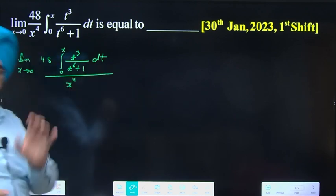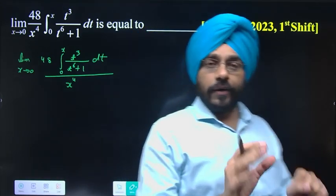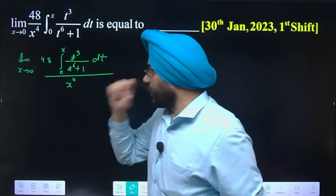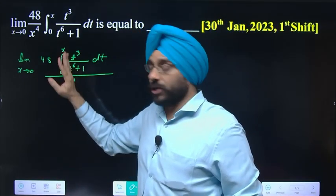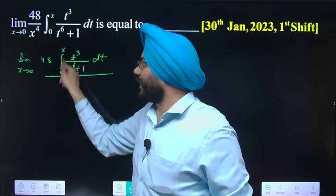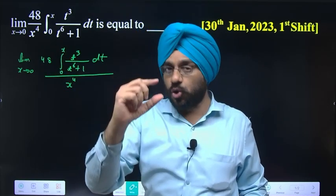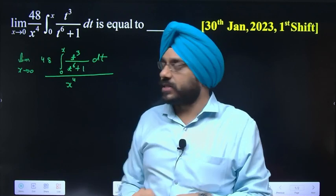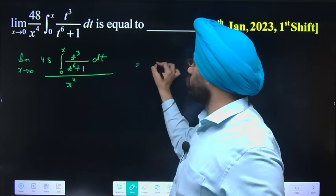The denominator x^4 becomes 0. If we put x value 0 in the numerator, the integral from 0 to 0 is 0. This gives us 0/0 form.